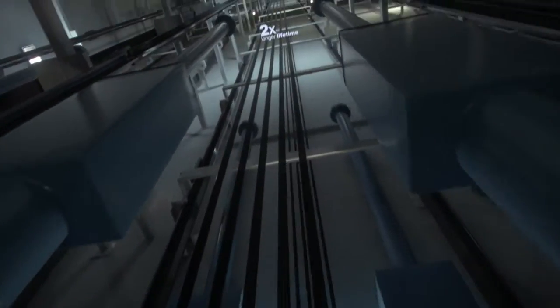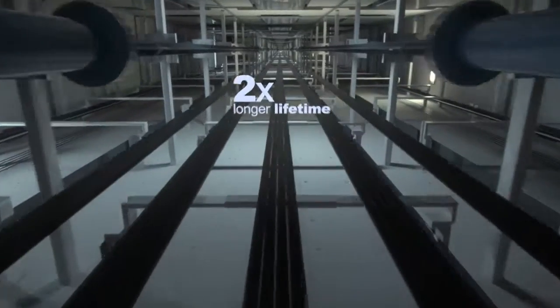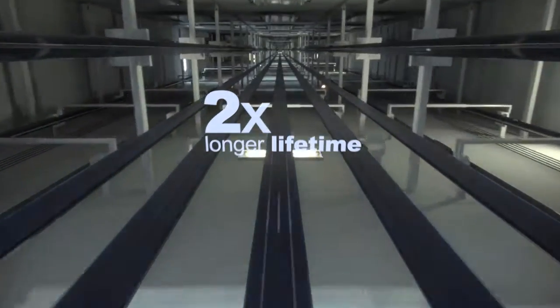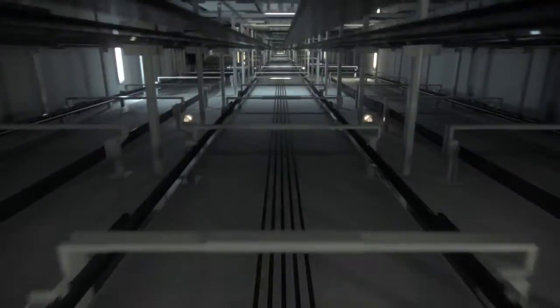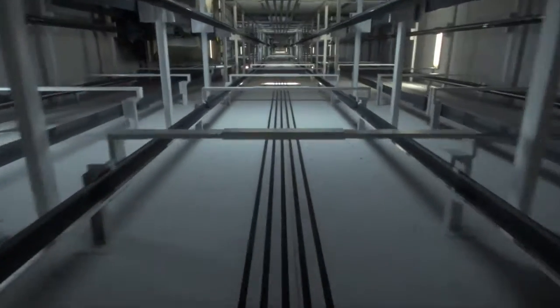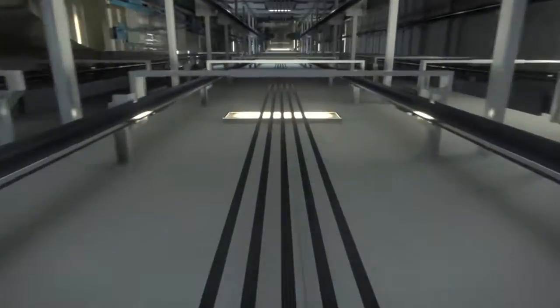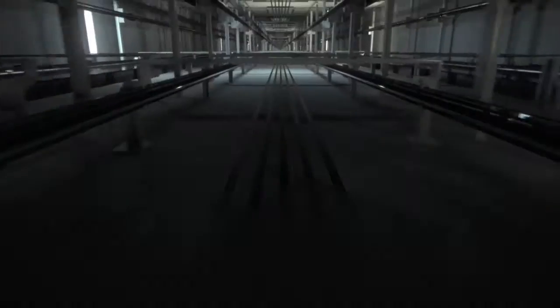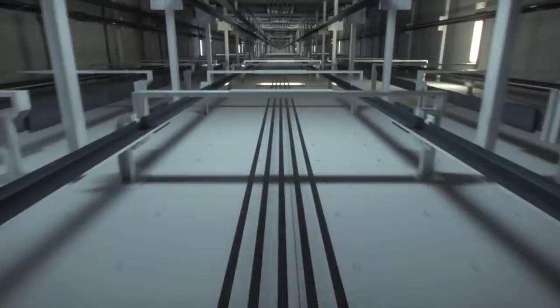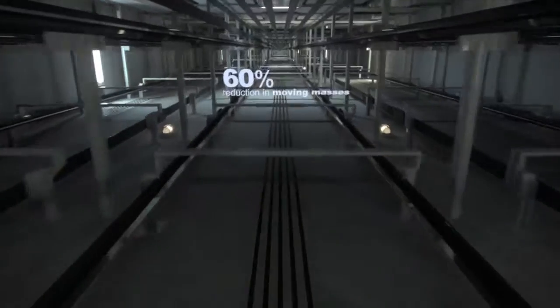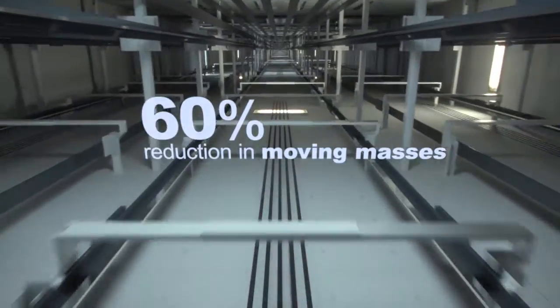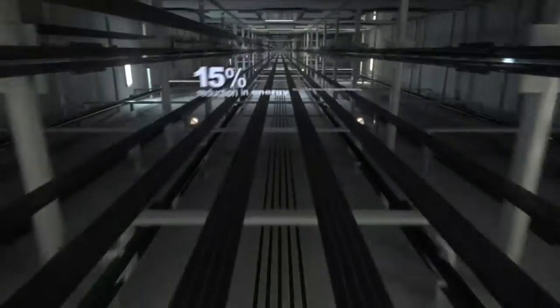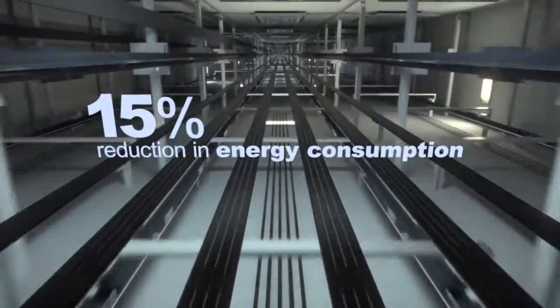Not only does Cone Ultra Rope last twice as long as conventional steel rope, it's also less sensitive to building sway, adding up to a significant reduction in elevator downtime. With an elevator travel height of 500 meters, this lightweight rope cuts the elevator's moving mass by 60% and reduces energy consumption by 15%.